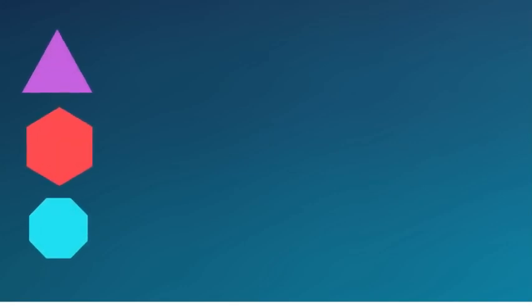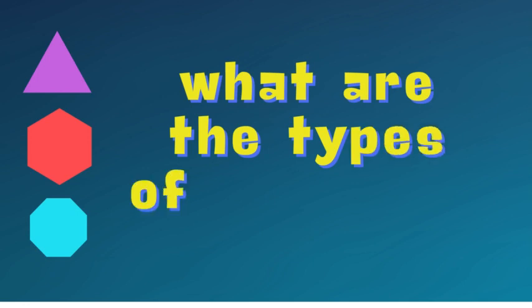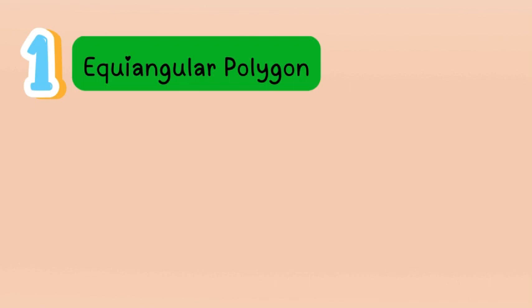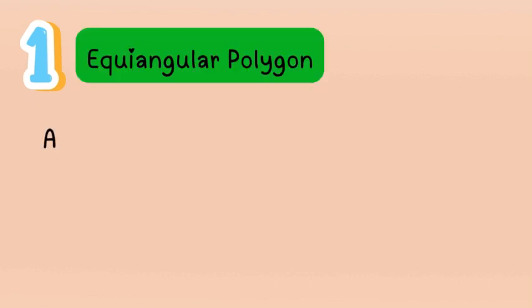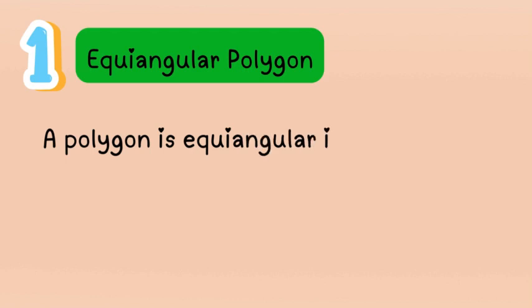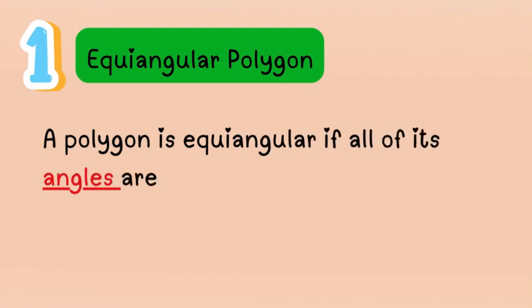We are going to learn the different types of polygons. First, we have the equiangular polygon. A polygon is equiangular if all of its angles are congruent — congruent meaning having the same size and shape.